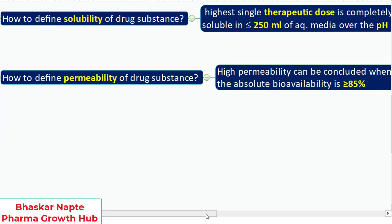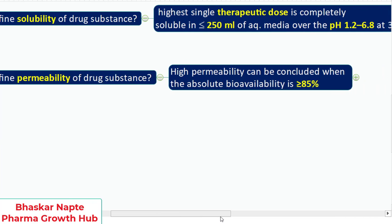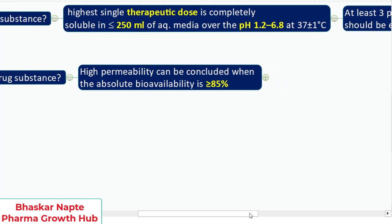How to define the permeability of the drug substance? Here is the answer. I'm just trying to make you clear what questions are possible when you're actually answering the BCS classification question. High permeability can be concluded when the absolute bioavailability is equal to or greater than 85%.